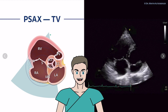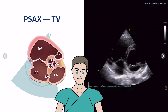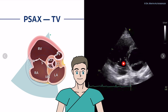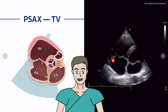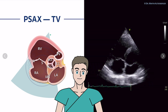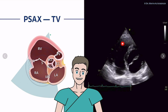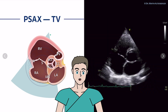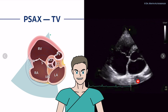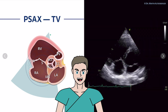With the tricuspid valve, it's important to differentiate the leaflets. In this case, we see the septal leaflet and the posterior or anterior leaflet, depending on how you angulate the transducer. Here we have the right ventricle and the right atrium; the pulmonic valve is not seen in this view. As a side note, the descending aorta can be seen down below.